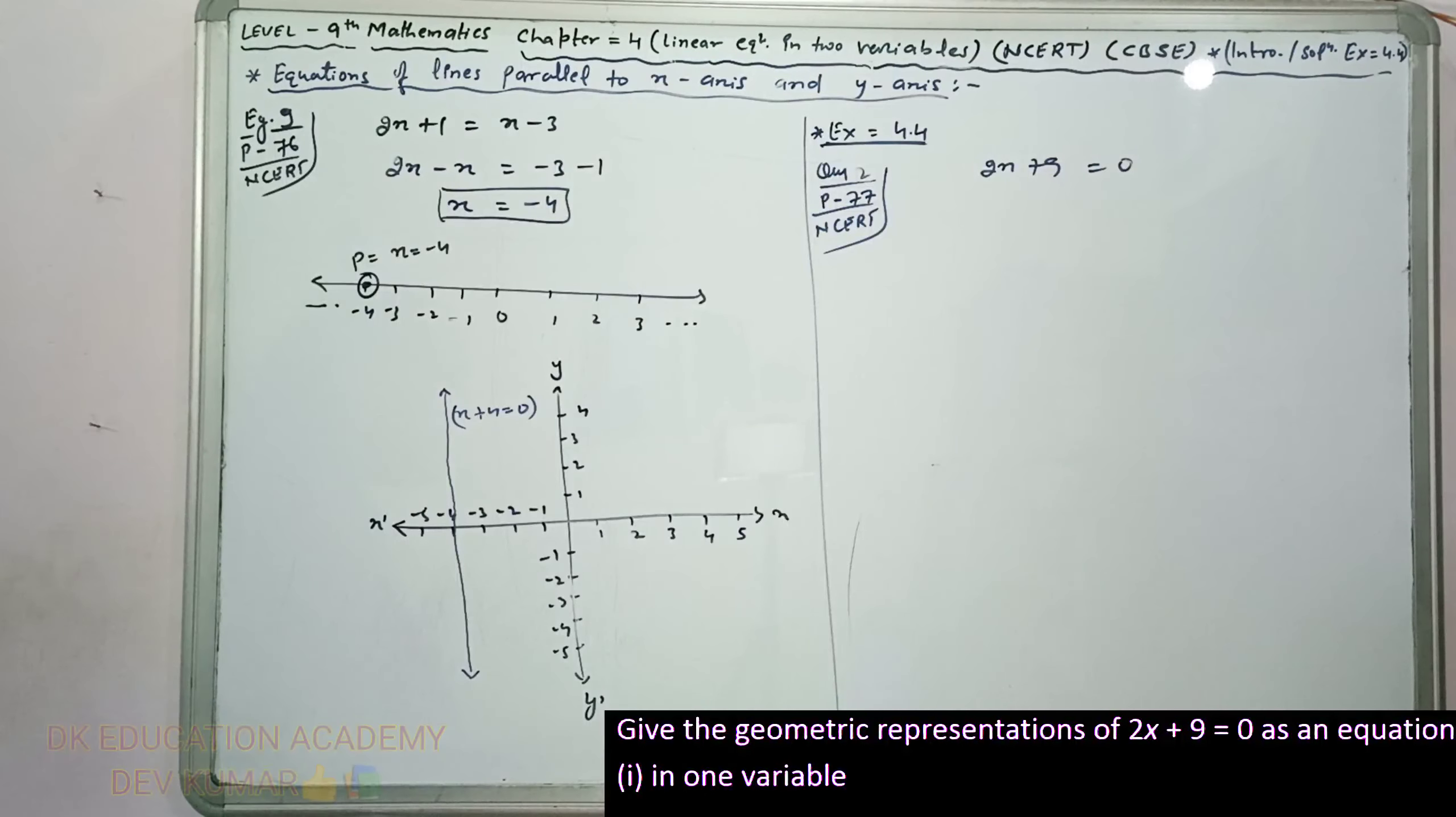One variable means on the number line, two variables means on the Cartesian plane. First we have to solve it. 2x plus 9 equals 0, so x equals minus 9 by 2, which is minus 4.5. Now when you plot on number line, it is minus 4.5. This is 1, 2, 3, 4, 5.